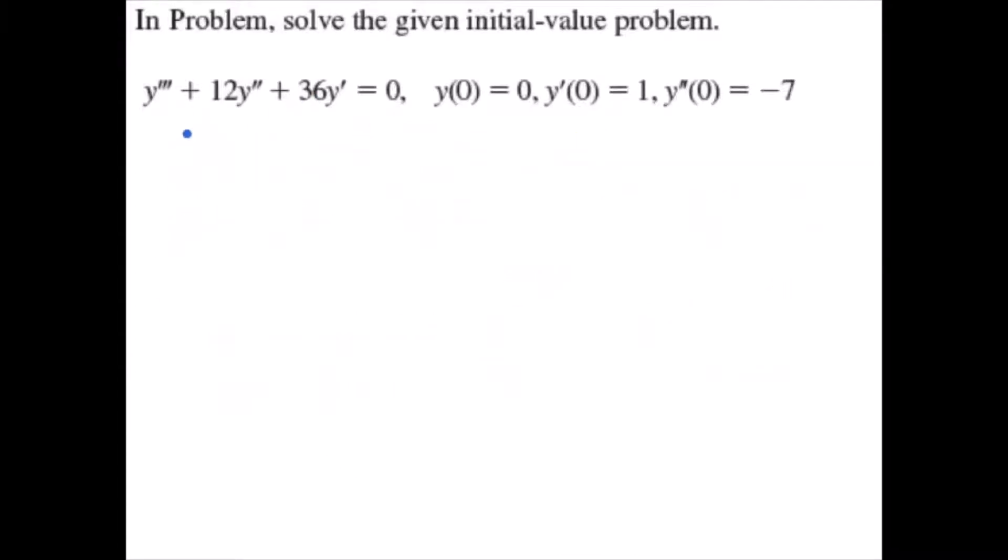If y = c₁ + c₂e^(-6x) + c₃xe^(-6x), then y' = -6c₂e^(-6x) + (1 - 6x)c₃e^(-6x).